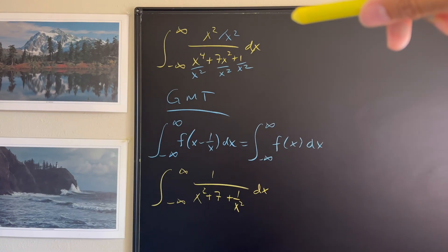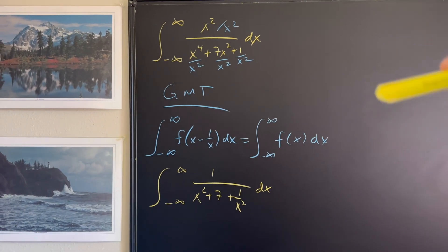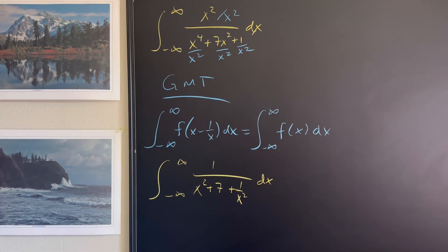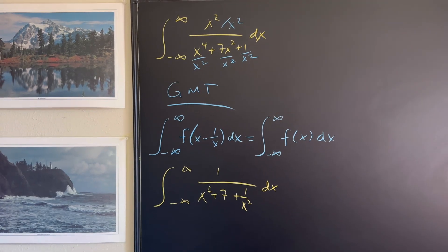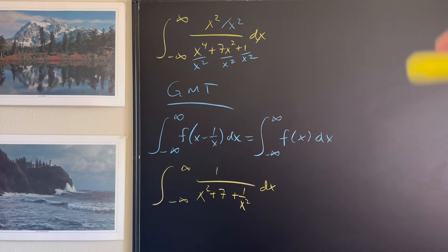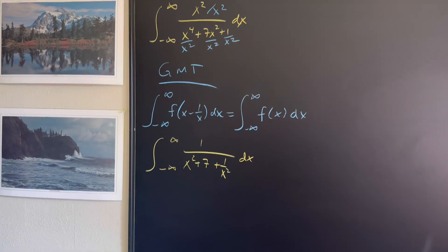So let's talk about how we got that. We got the x squared over x squared on the top, that was just one. And then we have x to the fourth over x squared, that was x squared. Then the seven x squared over x squared just became a seven. And then we have the one over x squared.